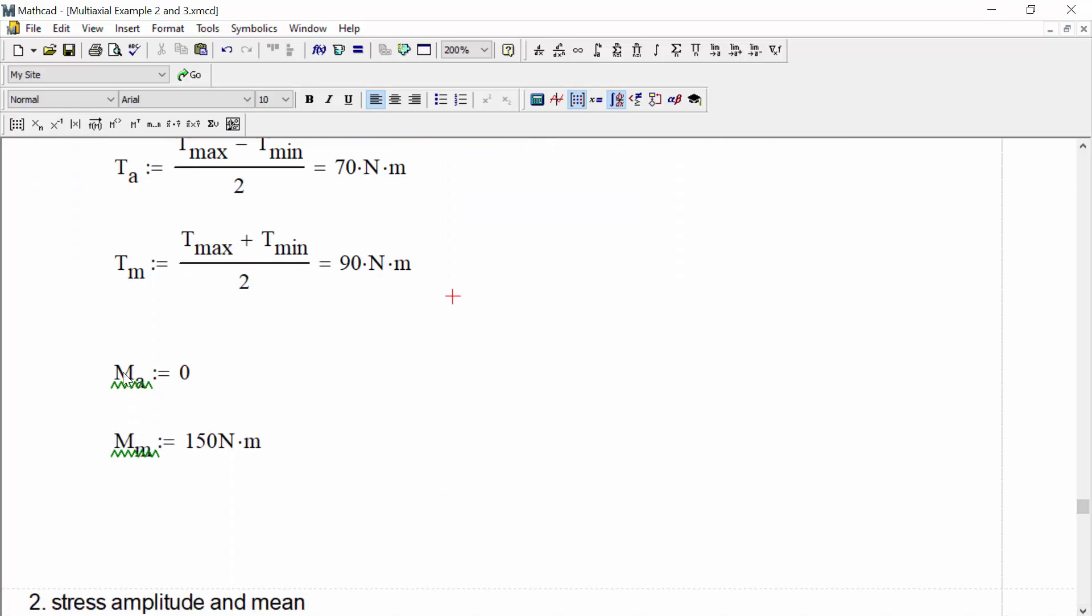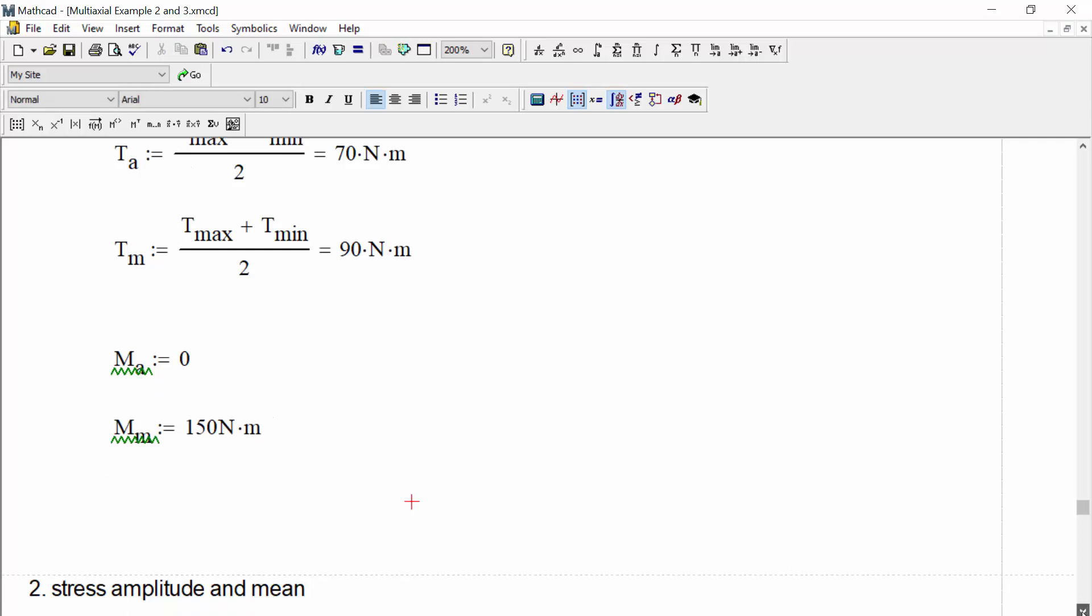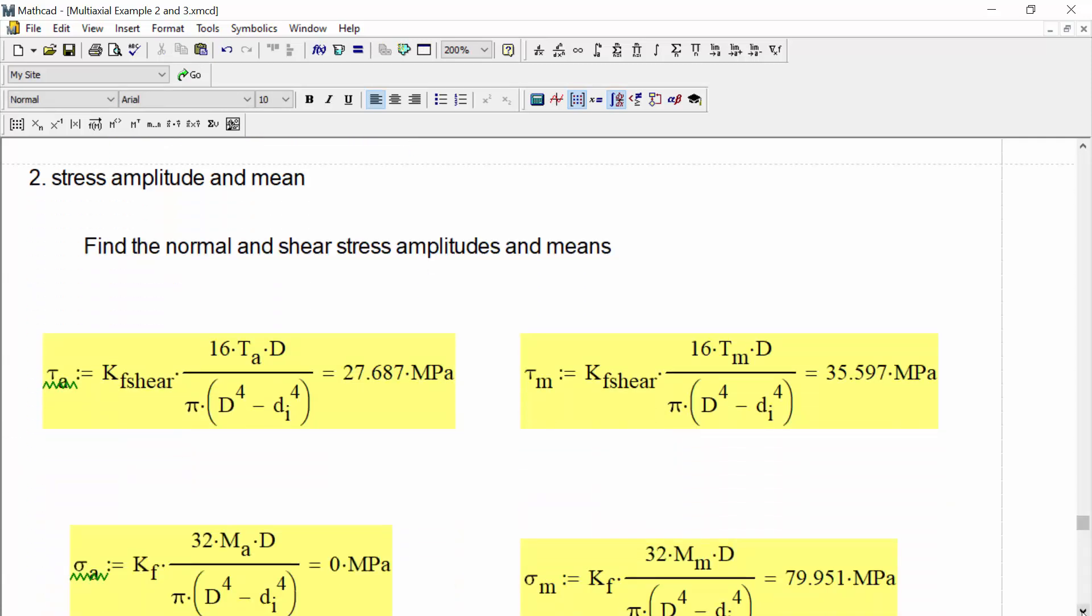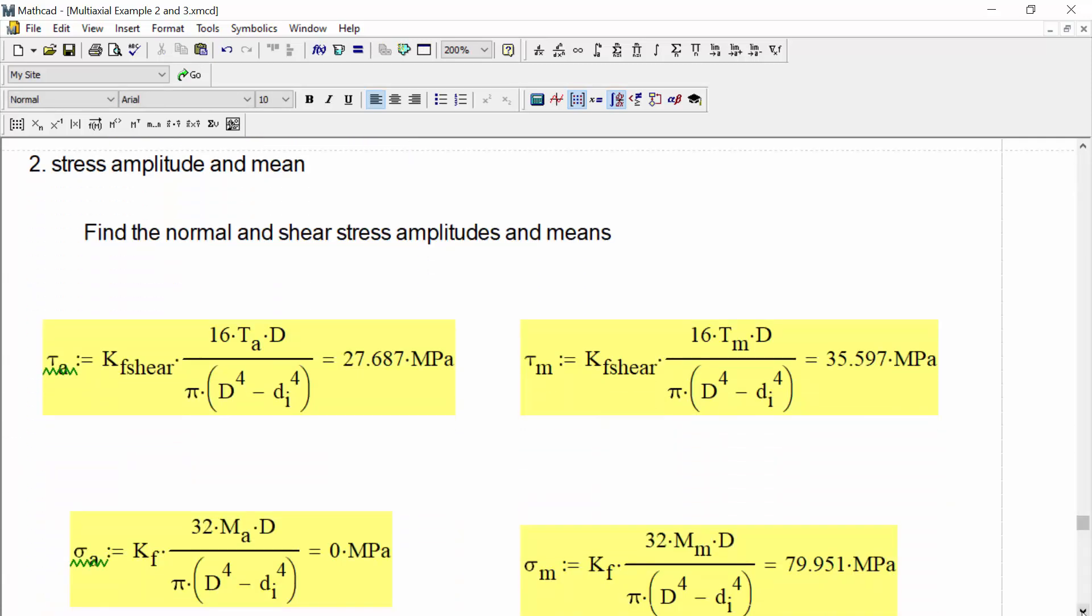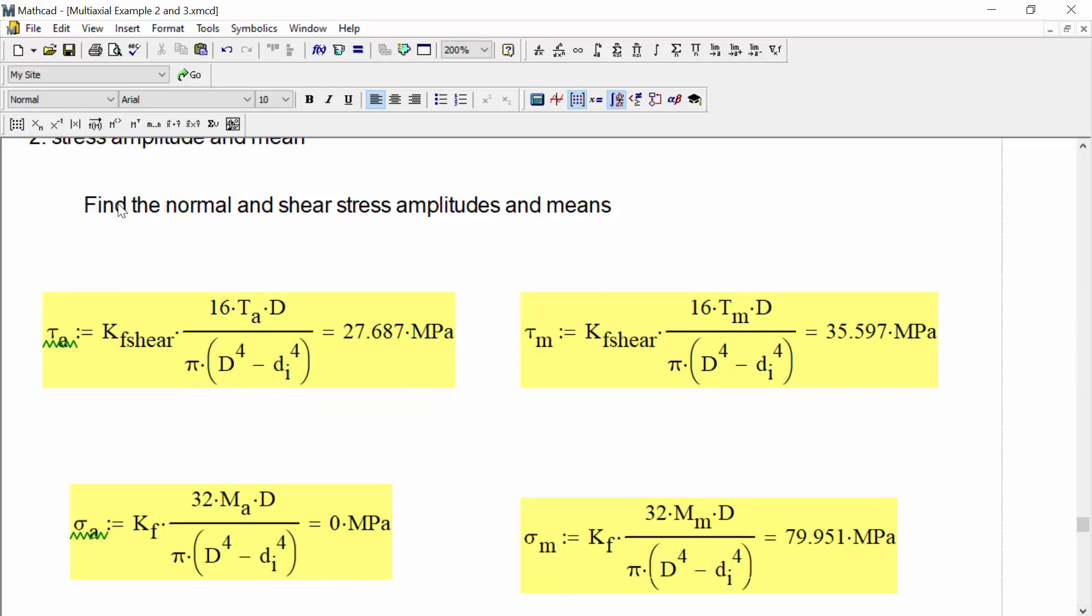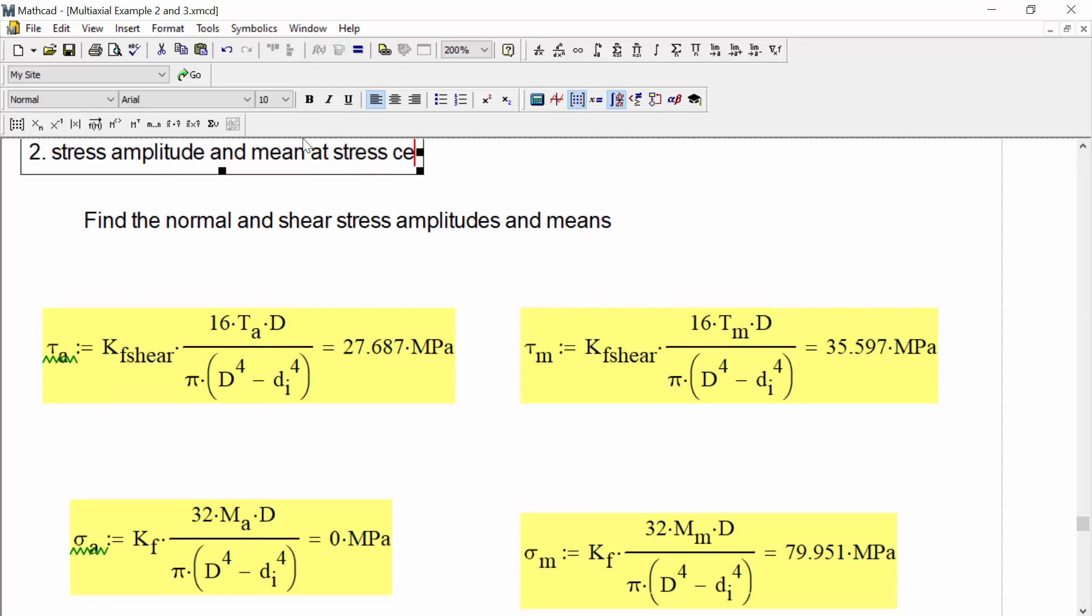For our moment amplitude, it's equal to zero, and for our mean moment, 150 newtons times meters. The next step is for us to calculate what the stress amplitude and mean stress would be from the torque and the bending moment. So what we'll do, and furthermore, those values at the stress concentration. Remember, we have a stress concentration from example 2.